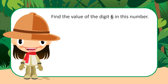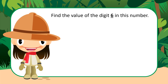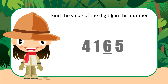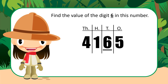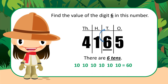Find the value of the digit 6 in this number: 4,165. First thing we're going to do is get our columns up. As we can see, the 6 is in the tens place. So that means that there are 6 tens. And what does 6 tens look like? 6 groups of 10.